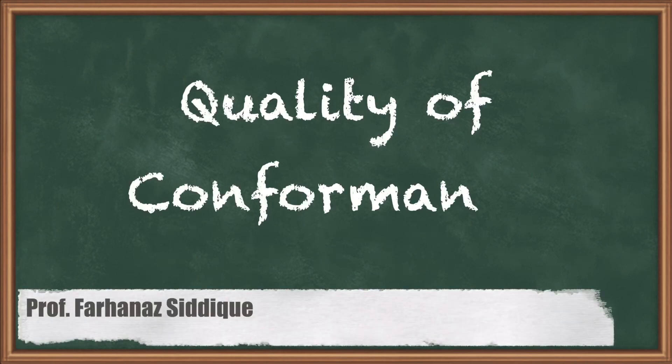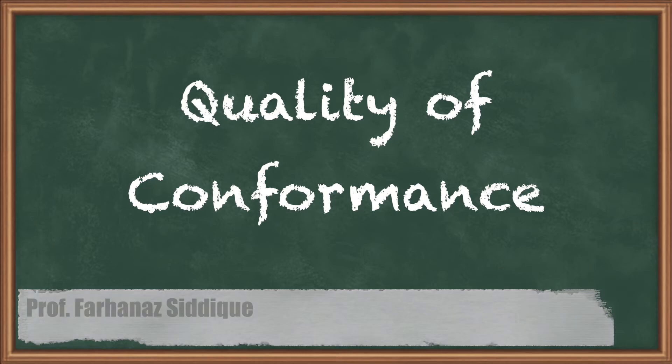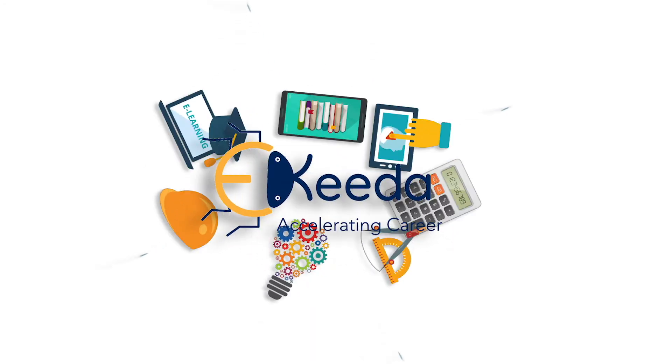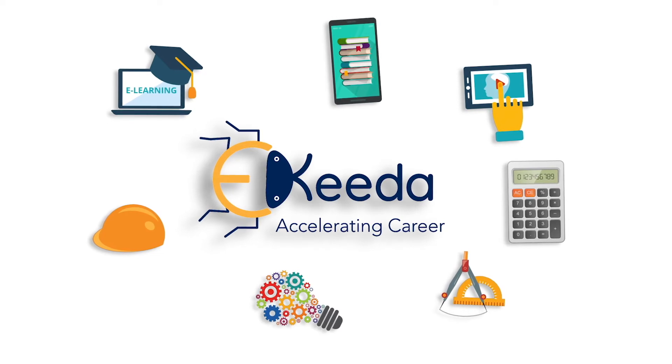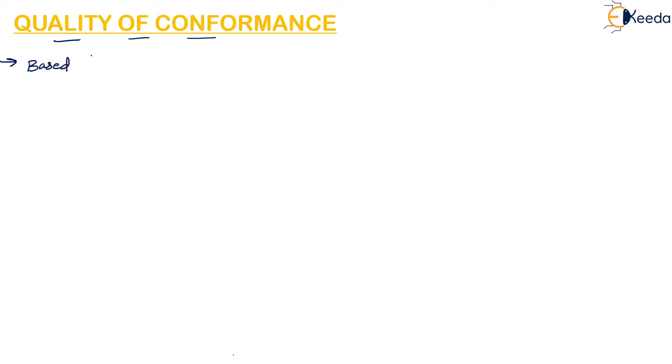Hello students, today's topic is quality of conformance. Based on the quality level, an ideal design will be made. Quality of conformance deals with whether the product produced confirms to the specifications or not. The quality level is decided based on customer's needs and an ideal design is made — that is nothing but quality of design.